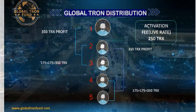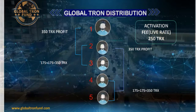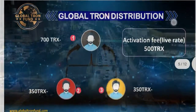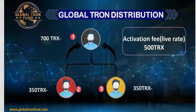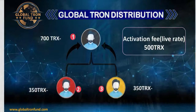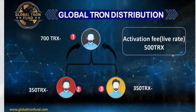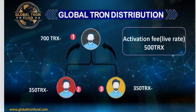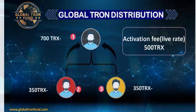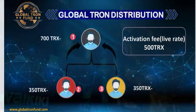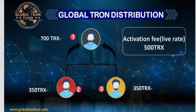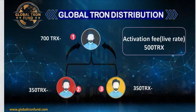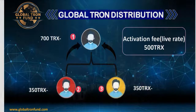As per this diagram, members will get yearly income. Now for the 500 TRX package: if anyone activates with 500 TRX, from members 2 and 3, 350 TRX and 350 TRX will go to member 1. You will get 700 TRX from your downline.